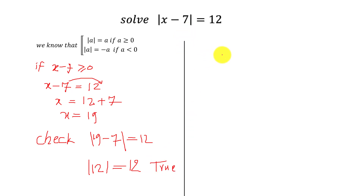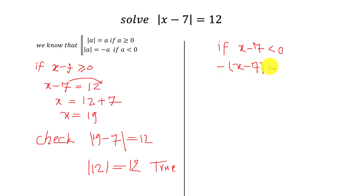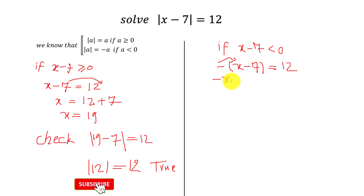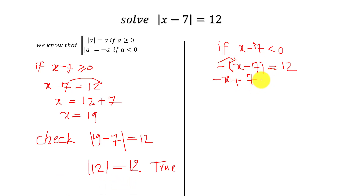And for the second solution: if x minus 7 is negative, we get negative of the factor x minus 7 equals 12. We multiply this out and we get negative x plus 7 equals 12.